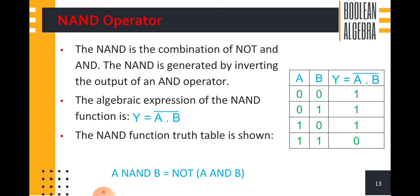The algebraic expression of the NAND function is Y equal to A dot B, the complement — written as A dot B with an overbar. The output of AND operator is A into B, so we take the complement of AND operator, that is A dot B overbar, and this is the output of NAND operator. The NAND function truth table has two input variables A and B, and output Y equal to A dot B whole bar. With two variables, two power two equals four combinations are possible.